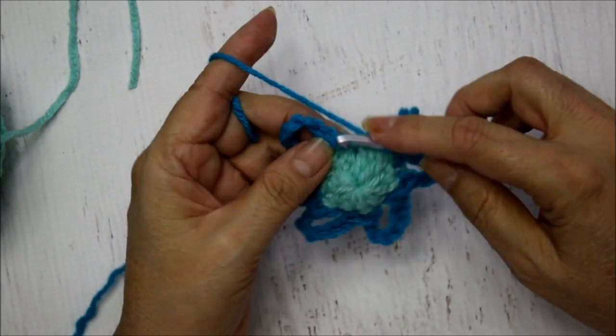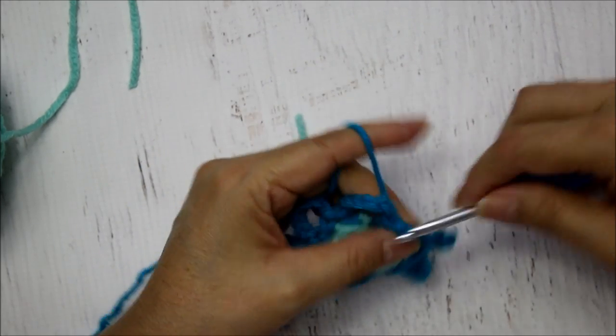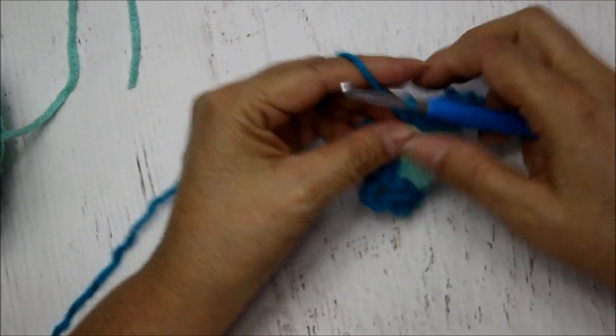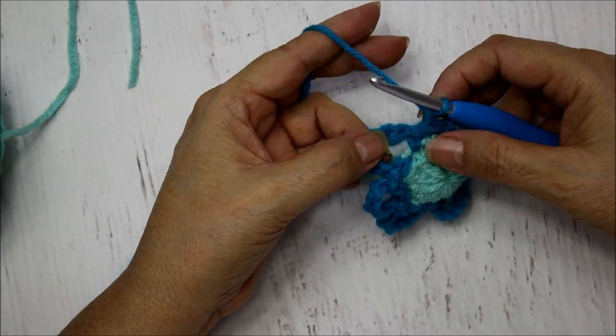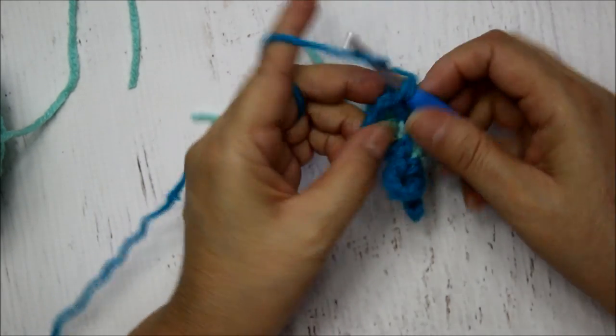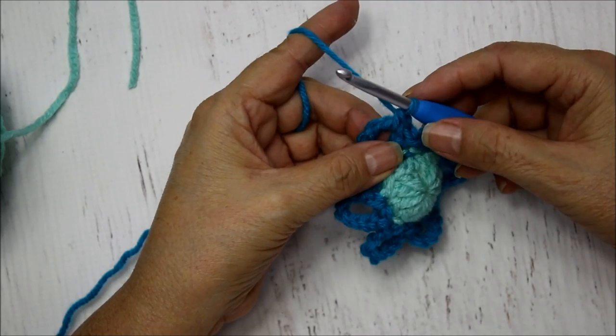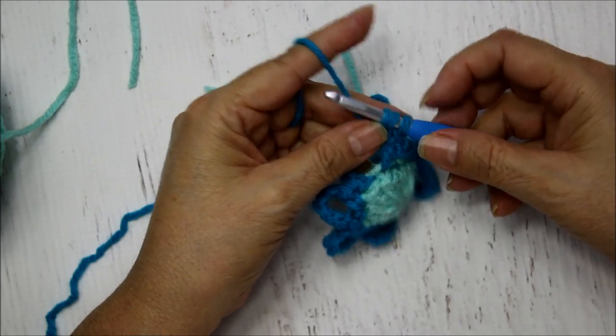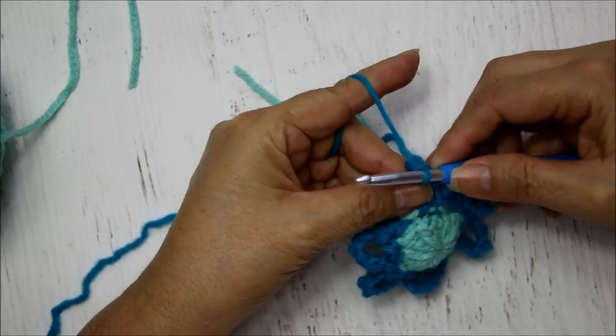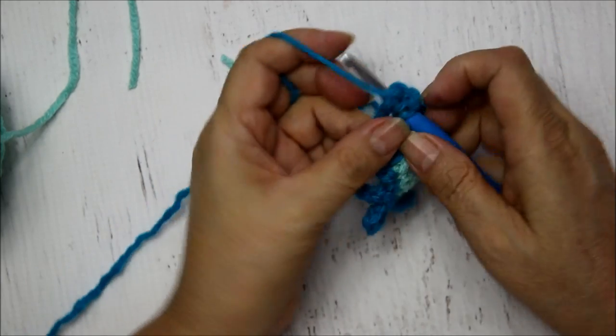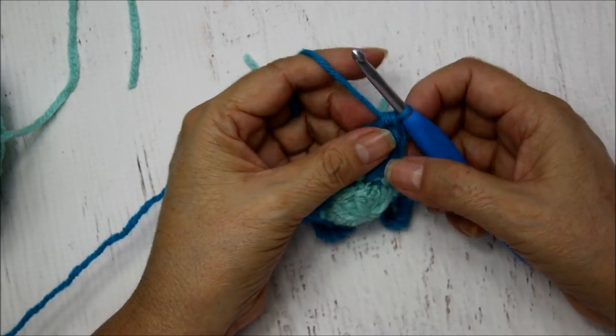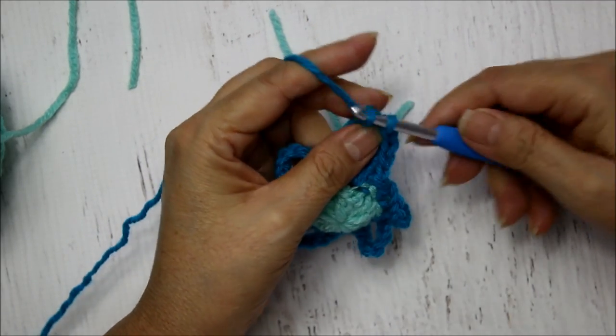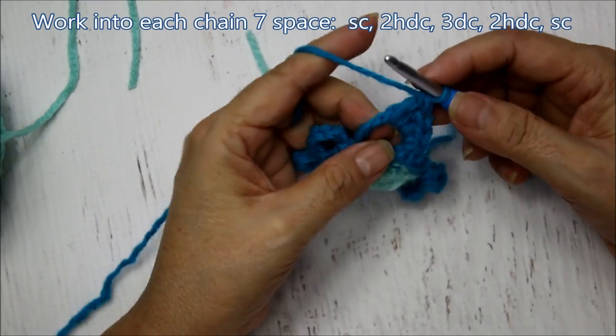Now after here, we're going to join with a slip stitch into that first single crochet that we had there. Just slip stitch into there. Let me get that there. And now I'm going to chain one. And we're going to repeat this for every petal. We chain one, then we're going to do single crochet, 2 half double crochets. To do a half double crochet you yarn over, go in there. But now we have three loops. We're going to go through all three loops. That's a half double crochet. And we're going to do two of those. And then we're going to do three double crochets. Yarn over, go in there now, pull through the first two, the next two. Do that two more times.